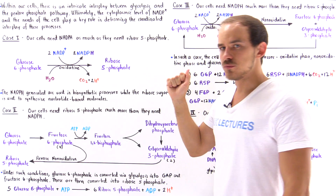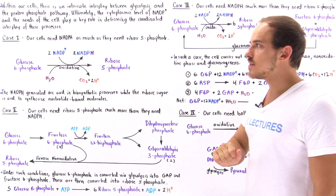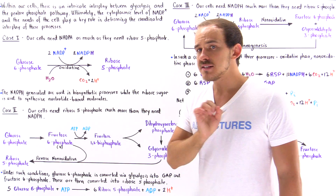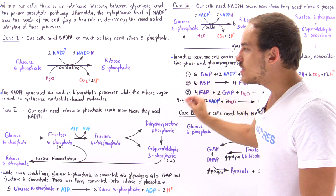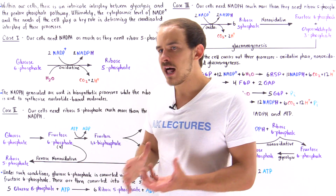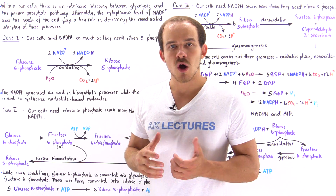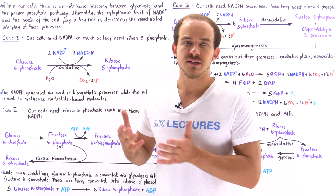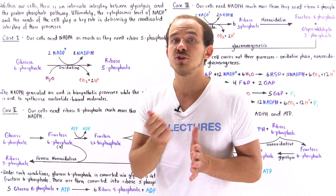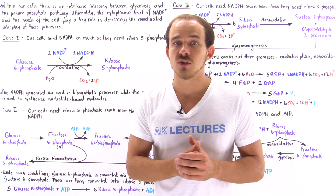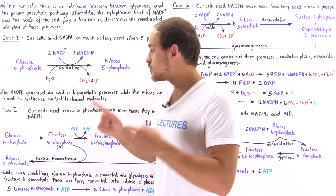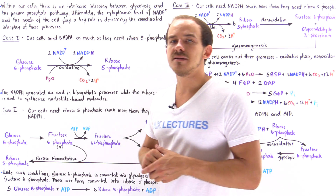Now let's move on to case 2. In case number 2, we're assuming that our cell needs the ribose-5-phosphate molecule much more than it needs the NADPH molecule. An example of a cell that experiences this scenario is a cell that is about to divide. A dividing cell needs to replicate and build nucleic acids and DNA molecules, so it needs the ribose sugar molecule much more than it needs NADPH.